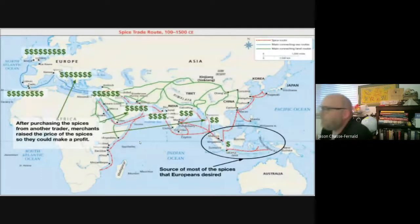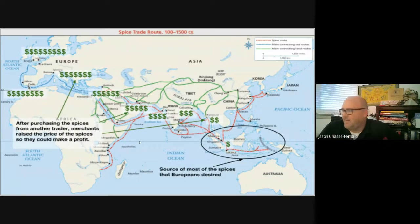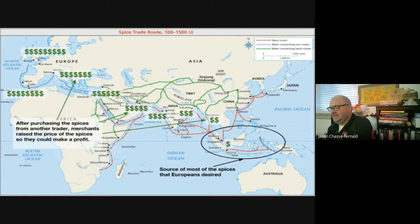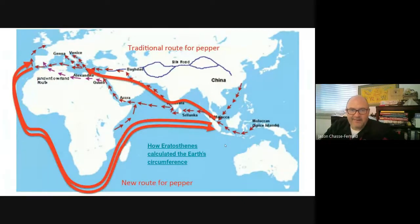So just a little help on contextualization: what's going on in the world before the Portuguese and Spanish maritime expansion begins? This infographic shows the source of most of the spices that Europeans desired, specifically around this region. Here's another infographic that you can use to help think about contextualization.